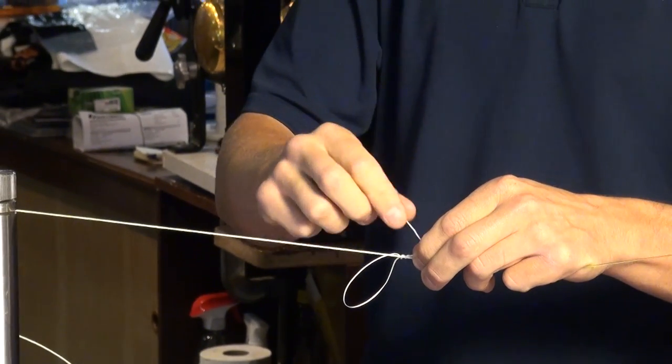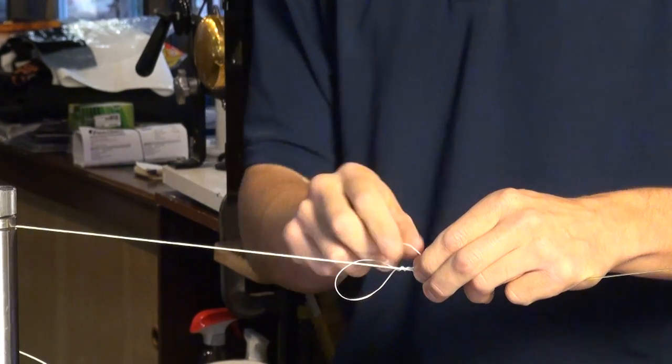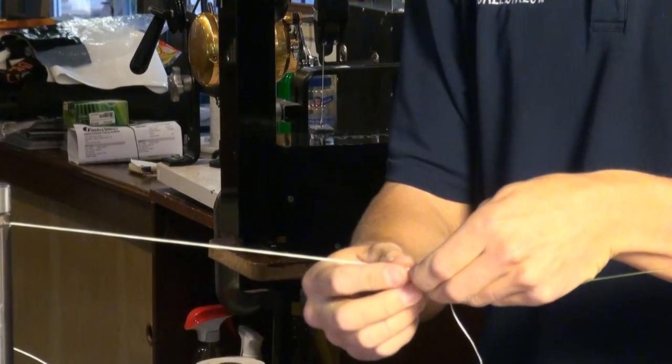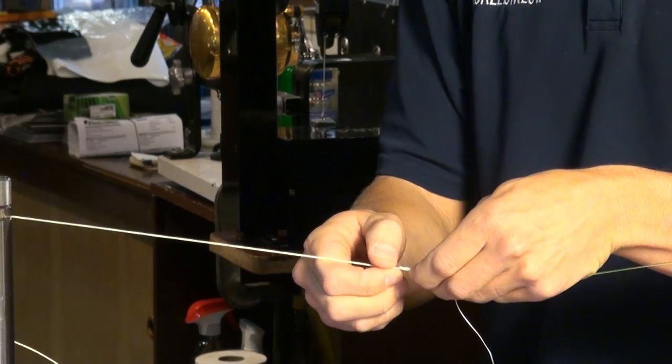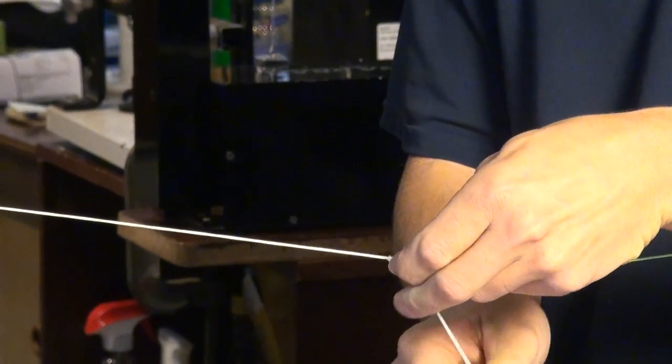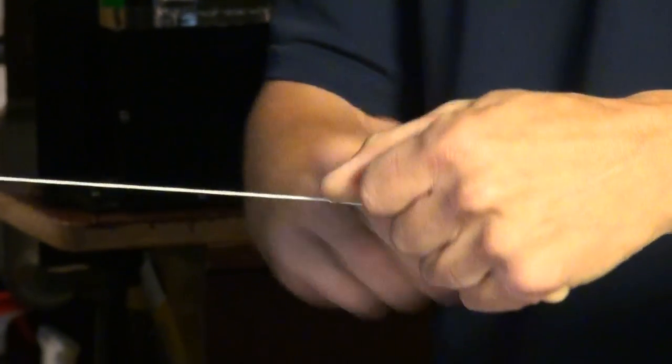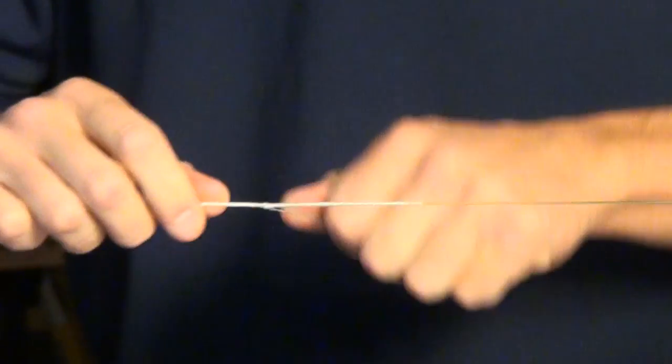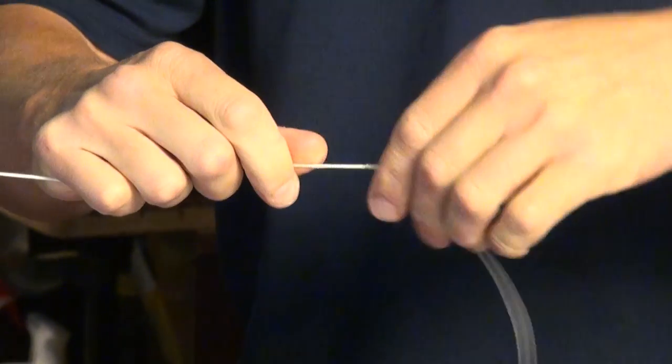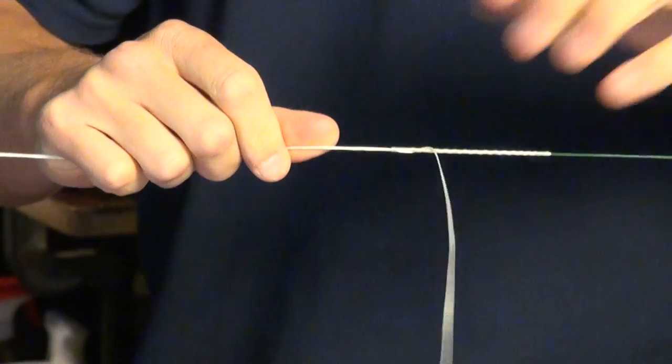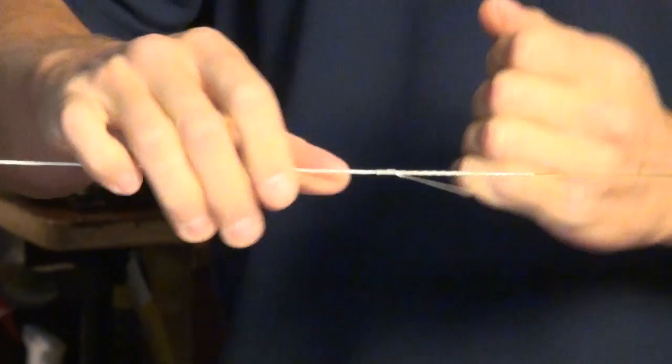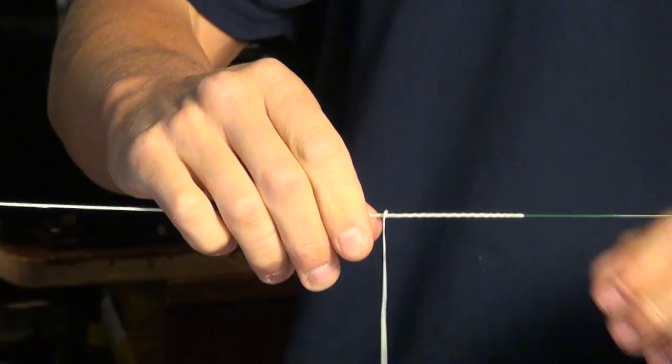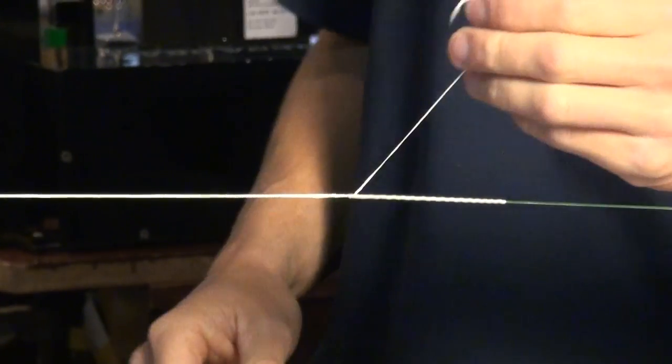And then now all I'm going to do is pull my tag end, which will get rid of this excess line here. Sometimes you want to sneak this out a little bit. Pull it tight. Give it a couple nice pulls. You can be tough with it. You can really lay into it. And then we're just going to cut our tag and we're good.